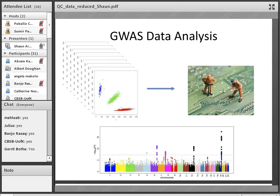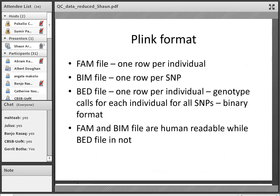We take that data and do a lot of mining, manipulating and quality control. Hopefully at the end we come out with an association test that gives us interesting results. But a very important aspect that must be done carefully and accurately before you even think about getting accurate association results is the quality control. Before jumping into that, I want to spend a couple of minutes talking about PLINK format, the very common format used in GWAS studies.